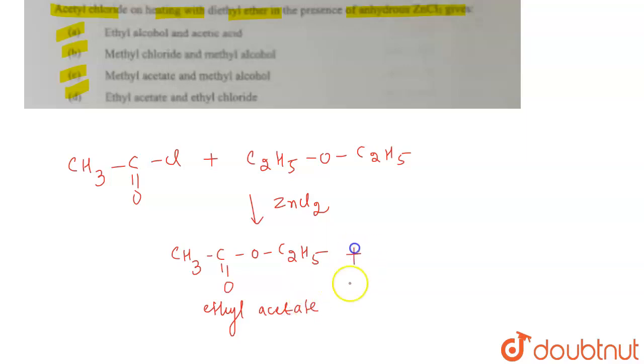Along with the formation of ethyl chloride, which is CH3-CH2-Cl. So these are the products formed. The first is ethyl acetate and the other is ethyl chloride - these are the two products obtained.